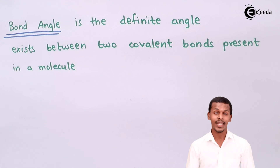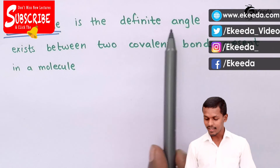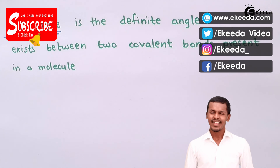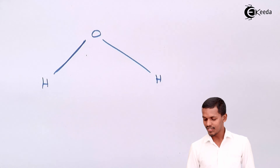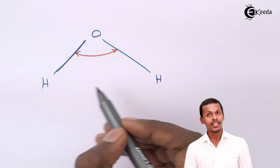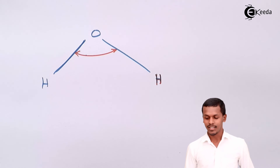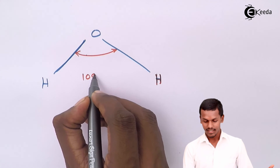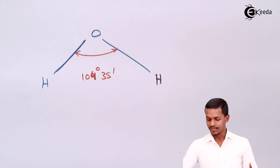Now the third parameter: bond angle. Bond angle is defined as the definite angle that exists between two covalent bonds present in a molecule. For water (H₂O), the molecule is not linear but has a definite shape with two covalent bonds, and the bond angle has been found to be 104°35'. For methane, which has a tetrahedral geometry, the bond angle between any two covalent bonds is 109°28'. Bond angles can be determined experimentally using X-ray crystallography and other methods.